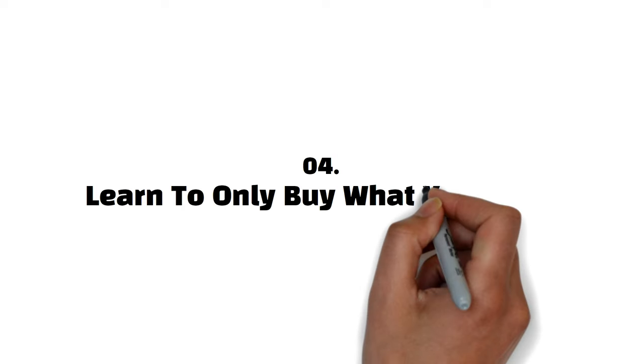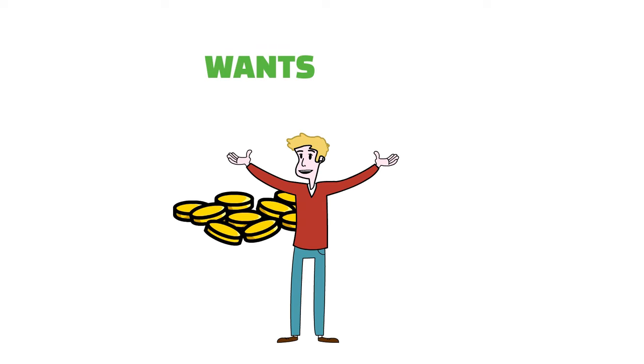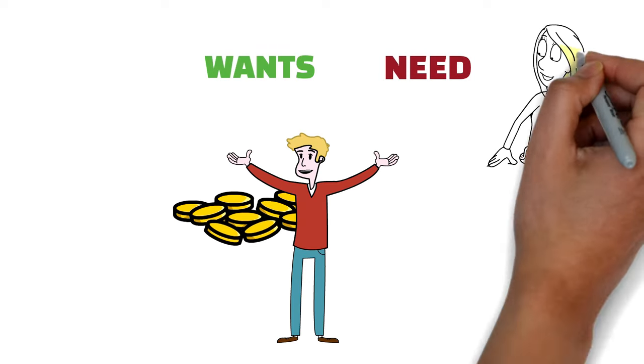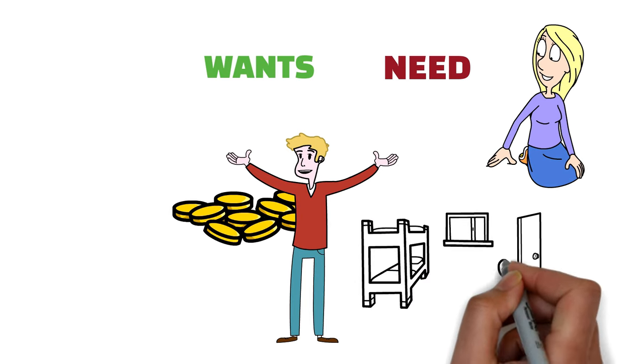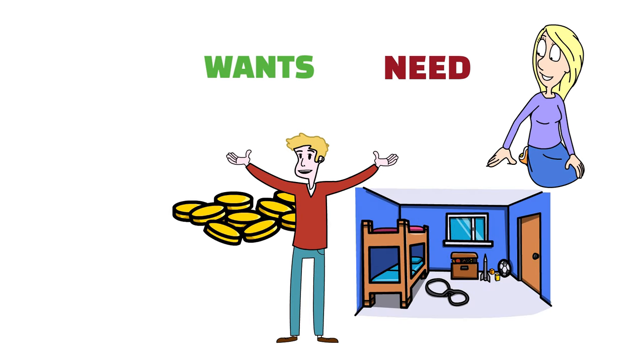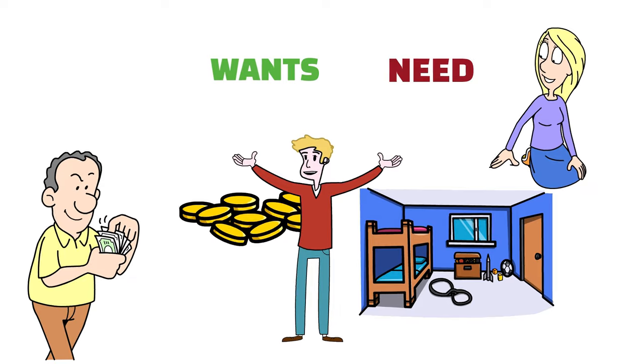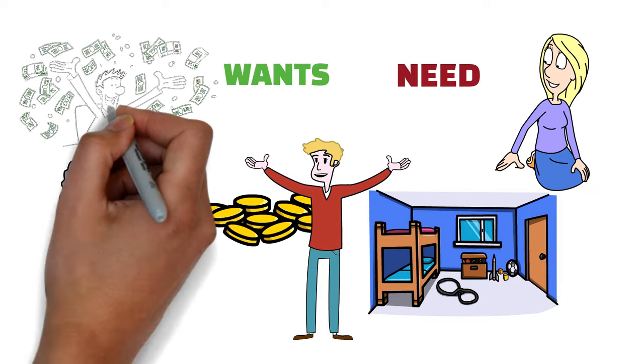Four, learn to only buy what you need. The truth is, sometimes we spend most of our money on what we want, not what we need. If you look around your home now, you'll surely find several things you bought that weren't necessary. That's evidence that you spend money on wants rather than needs. If you must get rich, then you must kill this habit.